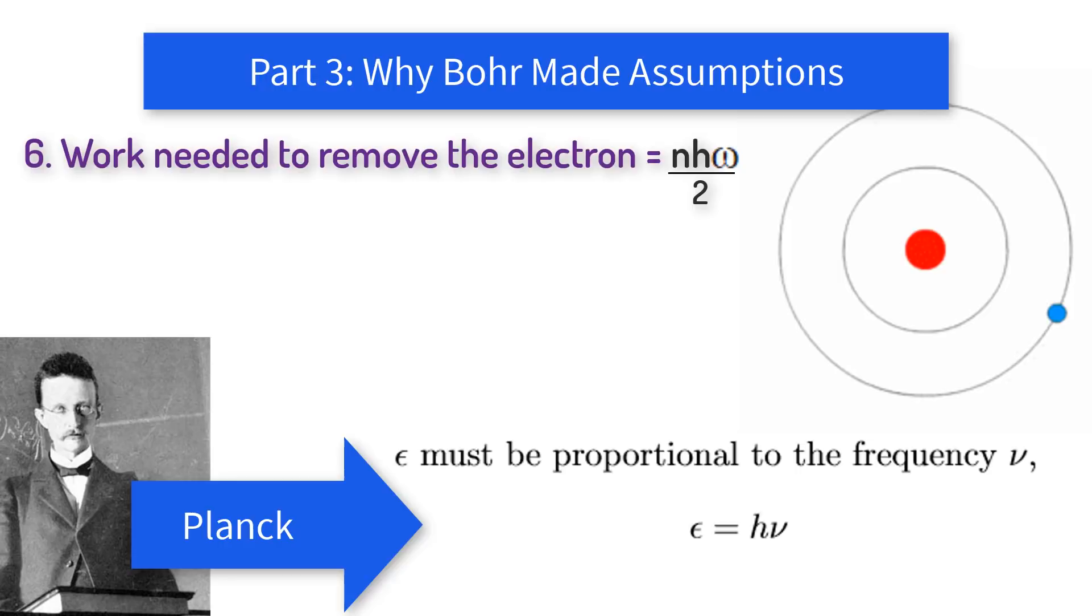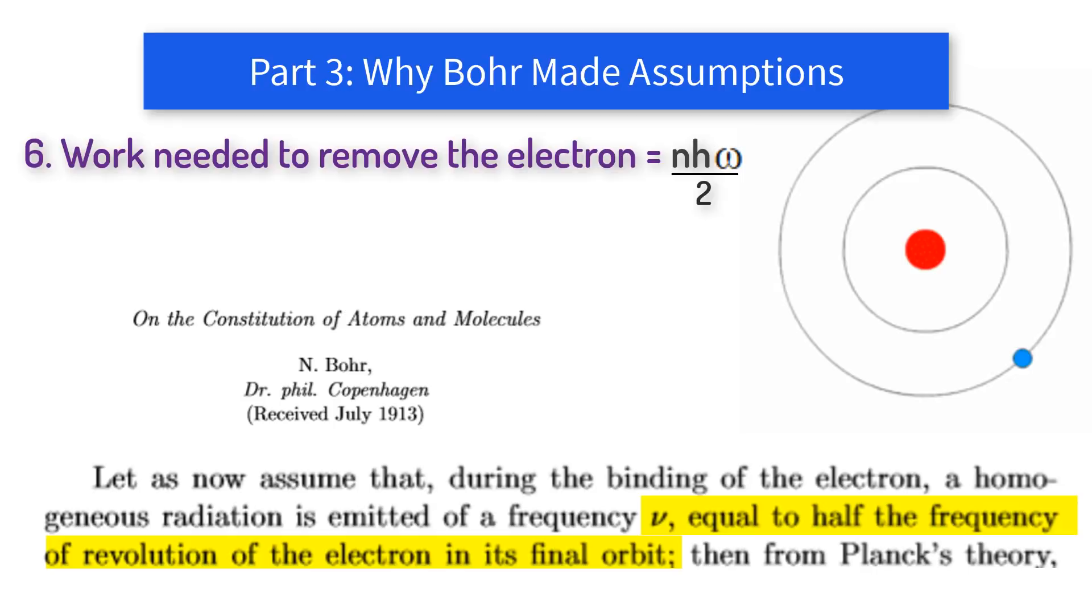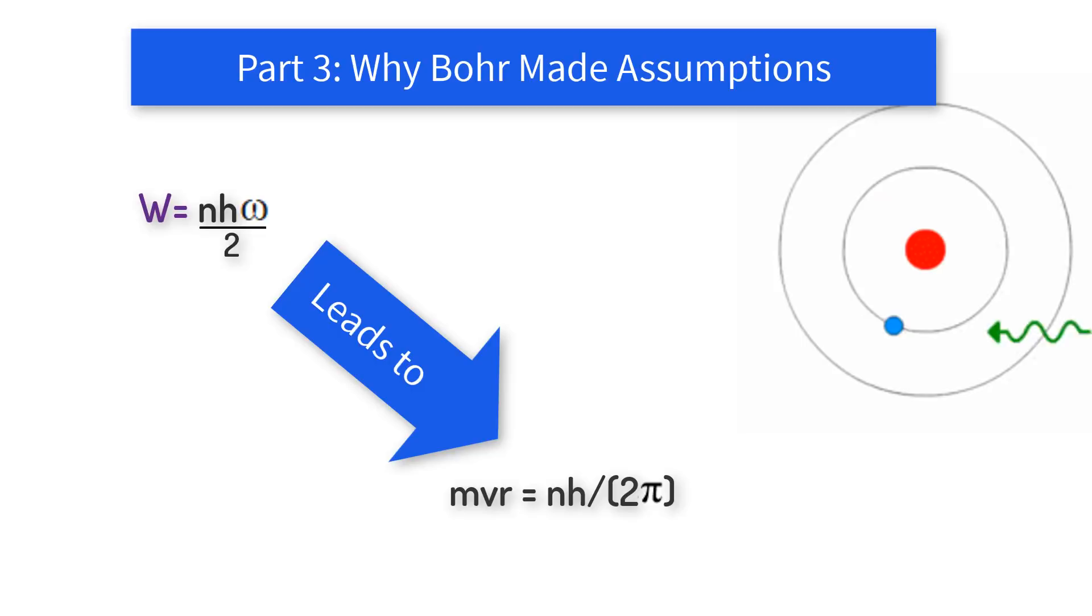He then set the limit that the work needed to remove an electron from an atom W to be nh omega over 2, where omega is the frequency of rotation of the electron, which begs the question: why divide by 2? Well, in the paper Bohr made an argument about averaging the work from the state of no motion which leads to the 2. He also might have divided by 2 because then the equations work out well for hydrogen. It turns out that for a circular orbit this limitation is equivalent to quantizing the angular momentum so that MVR equals nh over 2 pi, but this was his conclusion not his initial proposal, as I will show you right now in the math.